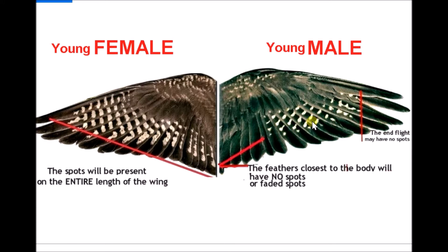The young female bird will always have spots in the complete feather stretch. You can see from the top till close to the body the entire wing length will be having spots. So this is how young females and young males less than one year old differ in their wing spot patterns.